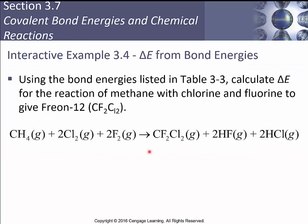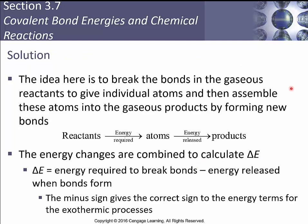We can use bond energies from our table to calculate the energy change for the reaction of methane with chlorine and fluorine to form freon CF₂Cl₂, plus HF and HCl. The idea is to break the bonds in the gaseous reactants to give individual atoms, then assemble those atoms into gaseous products by forming new bonds. The overall energy change equals the energy required to break bonds minus the energy released when bonds form; the minus sign gives the correct sign for an exothermic process.